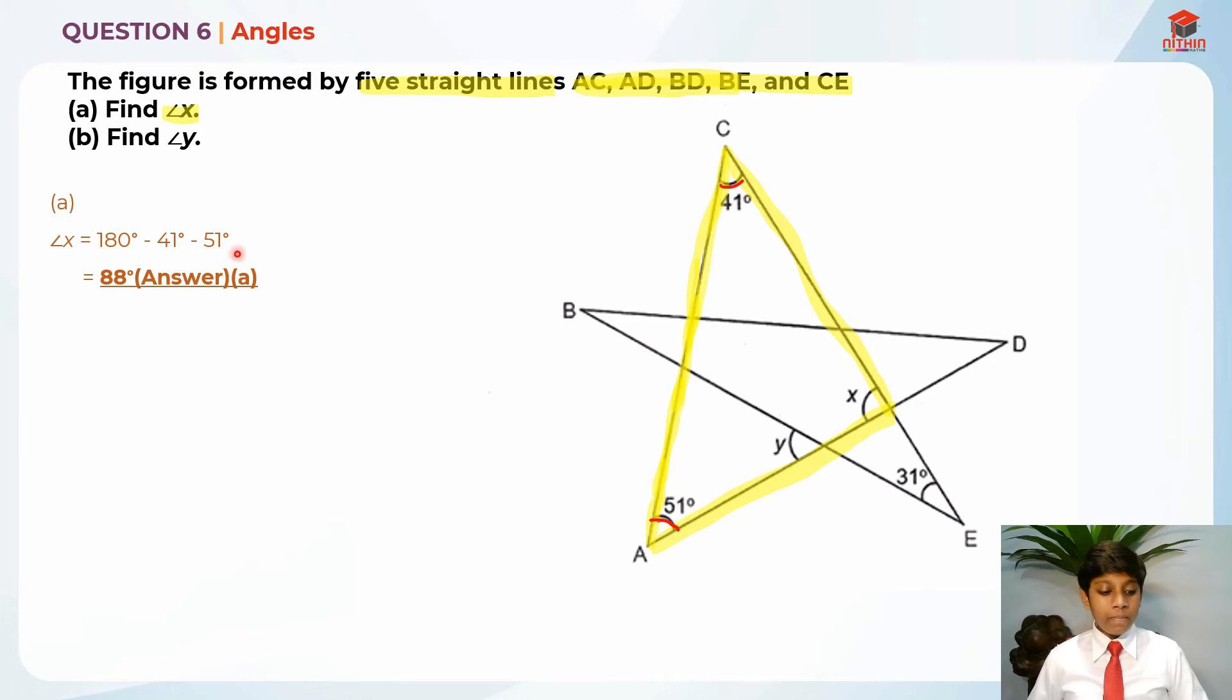For part B, they are asking us to find angle Y. Where is angle Y? It's over here. How are you going to find this? Let me label X as 88 degrees first. First, I'm going to find this angle over here. Just find as many angles as possible as you can with the given information.